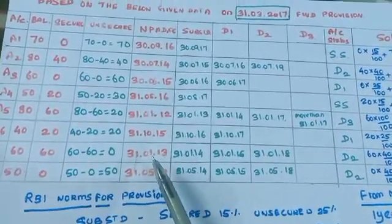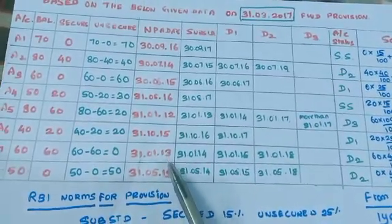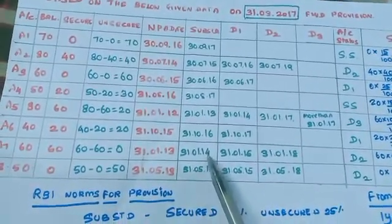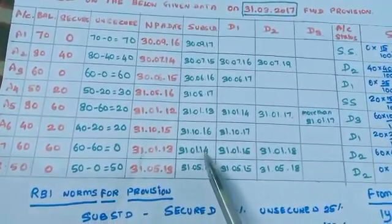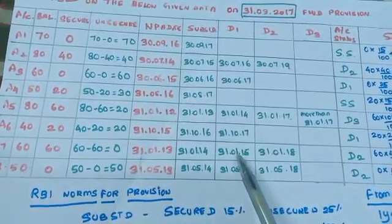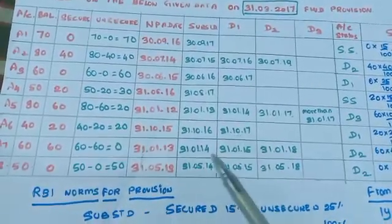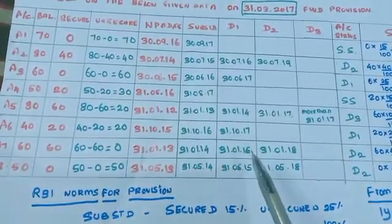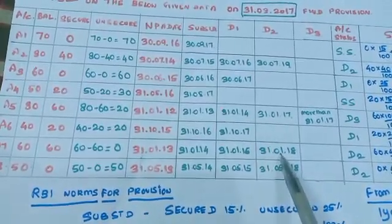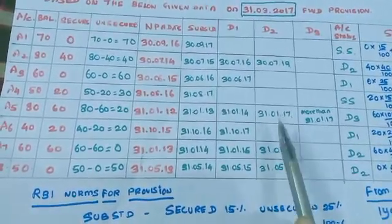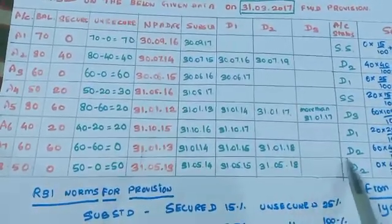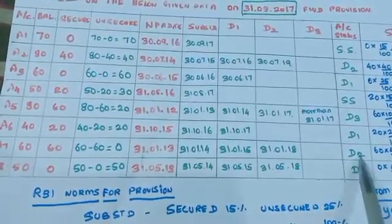The NPA date for A7 is 31-1-13. Up to 2014 it falls under substandard, up to 2015 it falls under D1. For 2016, 2017, and 2018 — that is 3 years — it falls in D2. So on 31-3-17, this account is in D2 category.